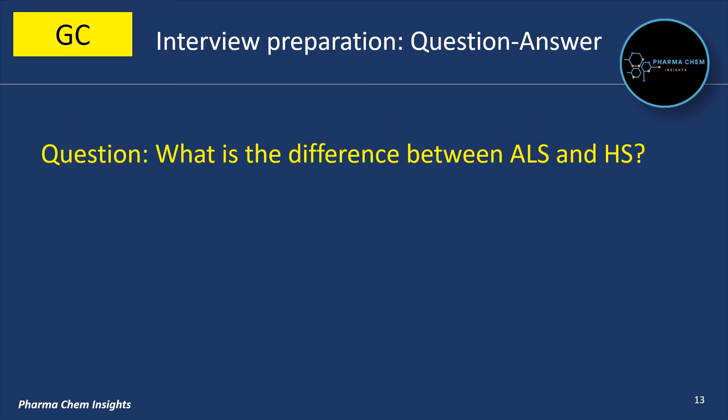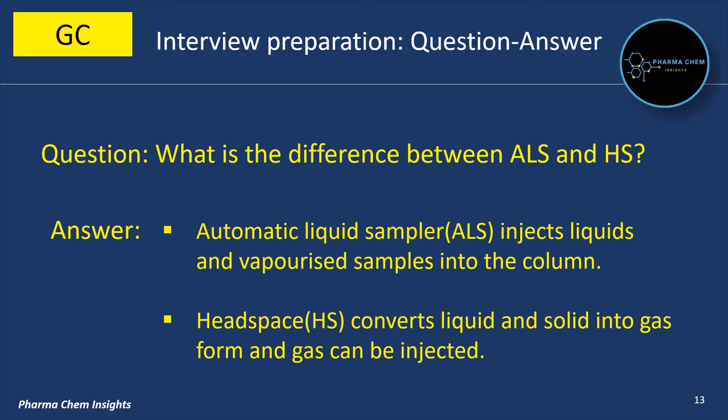Next question: What is the difference between ALS and HS? Automatic liquid sampler (ALS) injects liquids and vaporized samples into the column. Headspace (HS) converts liquid and solid into gas form, and the gas can then be injected.